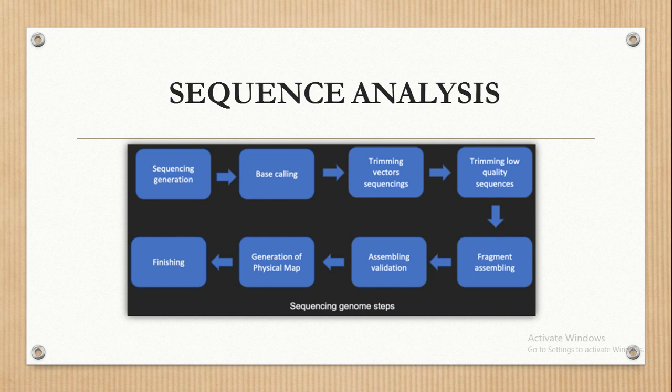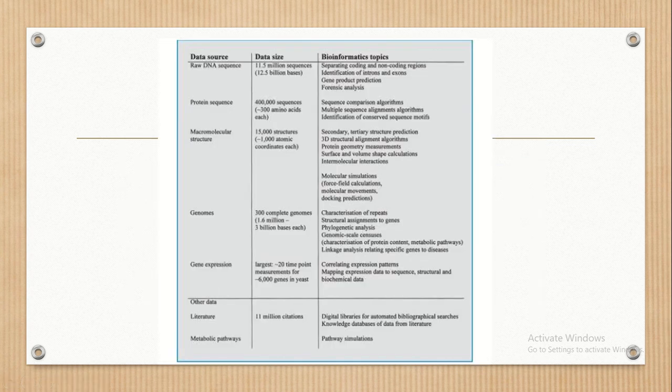Bioinformatics mainly focuses on the sequences of DNA, RNA, or any particular biological samples. The available data sources that can be fetched include DNA and protein sequences, macromolecular structures, complete genomic structures, and gene expression studies. Any particular research can be cited and completed easily with the help of bioinformatics tools.